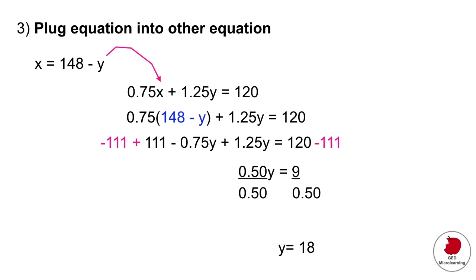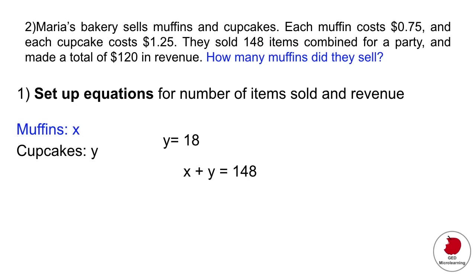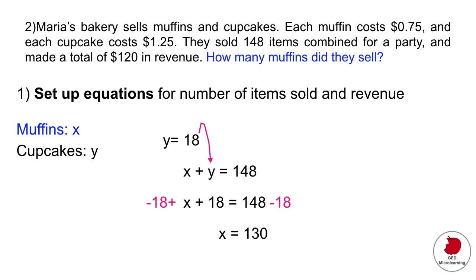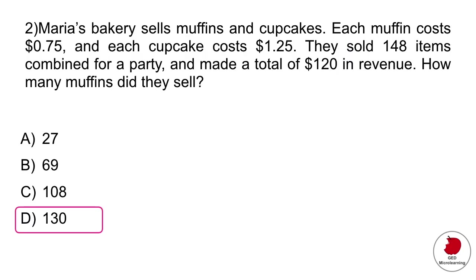We haven't finished though, because the question asks how many muffins were sold, and muffins is x in our setup — we just found y. So with the value y equals 18, plug it back into the first equation and solve for x. That gives you 130, so they sold 130 muffins altogether.